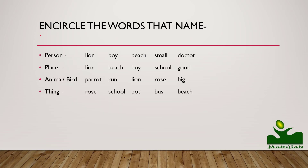So let's do this exercise. In this question, you have to encircle the words that name a person. In the first part, you have to make a circle around the name of a person. Like lion — lion is the name of an animal, so we won't circle it. Boy — boy is the name of a person, so we will circle it. Beach is the name of a place, so we won't circle it. Small is not any name, so we don't circle it. Doctor — yes, doctor is the name of a person, so we will circle it. In the second one, encircle the words that name a place. In the third, encircle the name of animal or bird. And in the last one, encircle the words that name a thing.